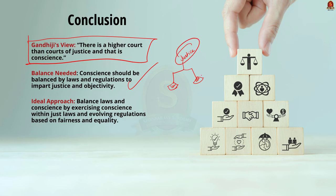The ideal approach should be balancing laws and conscience — exercising conscience within the spirit of just laws and evolving regulations based on principles of fairness and equality. So in this mains answer writing discussion, we saw in detail about conscience and why it is a guide compared to laws, rules, and regulations, and what are its limitations.